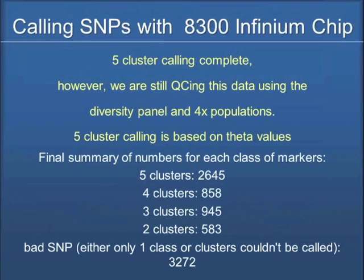This is very exciting to me that we can have this type of segregation data. When you work through the five-cluster calling, Candy is still working on the QC, but based upon the theta values — remember I talked about those theta values in Genome Studio — 2,645 SNPs fall into five clusters and 858 fall into four clusters, and so on. There are a number of SNPs that are going to be useful in being able to call at the five genotypic class level, but you want to go and look at them yourself in your own populations.